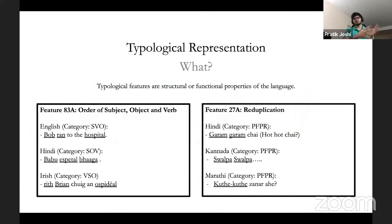After this, we decided to do a set of more in-depth analysis to figure out whether this disparity is reflected in those as well. The first one we did was on typological representation. Just a bit of basics: what is a typological feature? It is a structural or functional property of the language. To show two examples of typological features, the first one is the order of subject, object, and verb in a sentence. This is a feature and within each feature, you have a number of categories. For English, we have the category of SVO, subject, verb, object. So Bob ran to the hospital. And then in Hindi, we have SOV. So Babu Hospital Bhaga. Bhaga is ran.